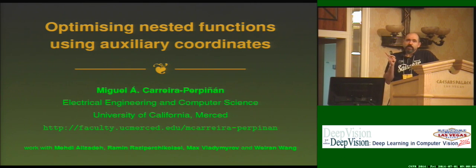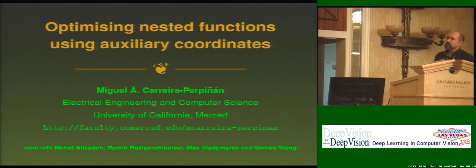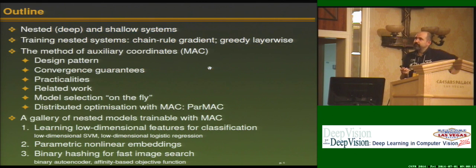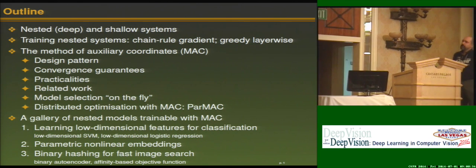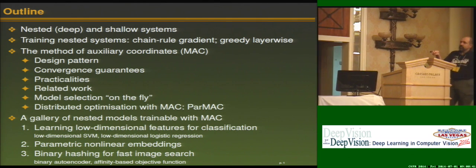This work is going to be about optimization — not that much about neural networks per se, but about optimization of deep systems. Neural networks are just one example of them. There are going to be two parts in the presentation. In the first part, I will describe what a deep or nested system is and the various ways that you can train it. I will introduce the method of auxiliary coordinates. In the second part, I will describe a number of different models that you can train in this way.